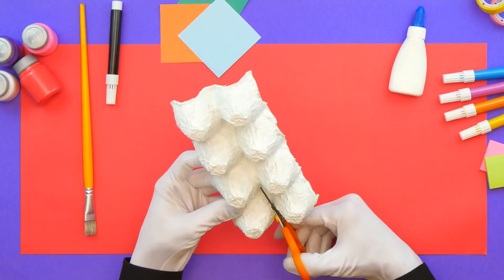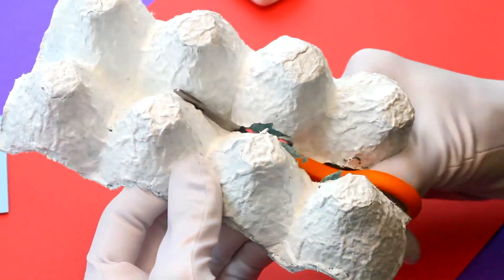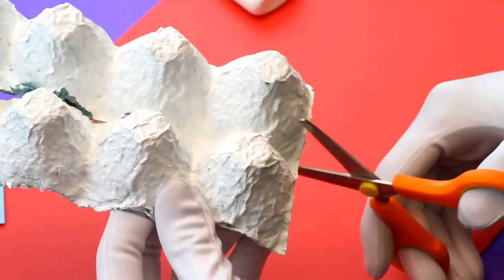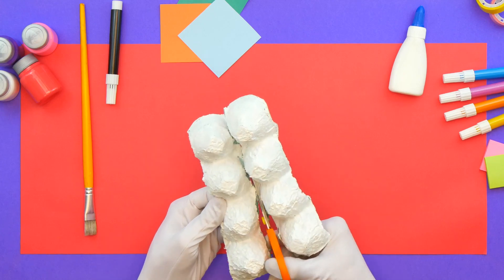What do we do first? Okay. Cut the egg carton in half. That will be the centipede's body. You can use the other half later, if you want.